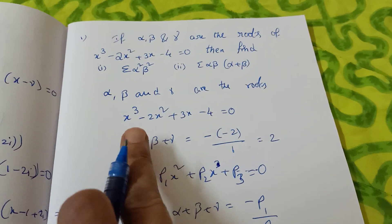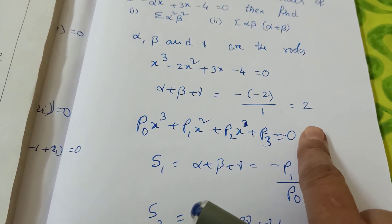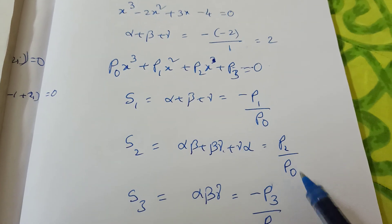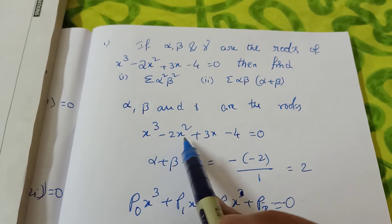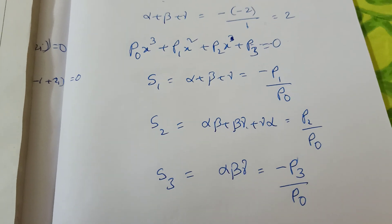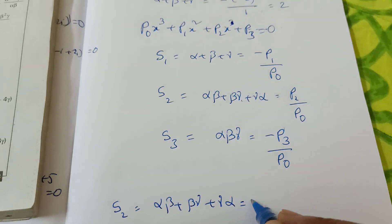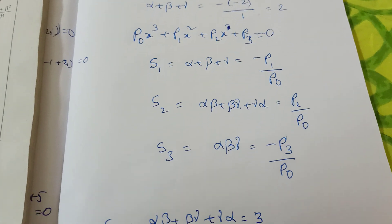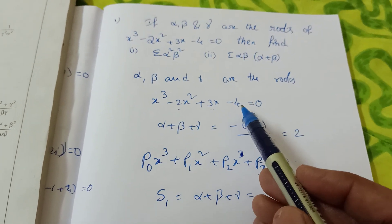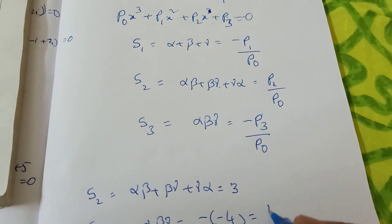Now, here in this question, what is S1, S2, S3? S1 is 2 — Alpha plus Beta plus Gamma. What is S2 in this? S2 is p2 by p0 — here p0 is 1, p1 is -2, p2 is 3 — so Alpha·Beta plus Beta·Gamma plus Gamma·Alpha equals 3. Now S3, product of roots, Alpha·Beta·Gamma — our formula gives minus of minus 4, which is 4.